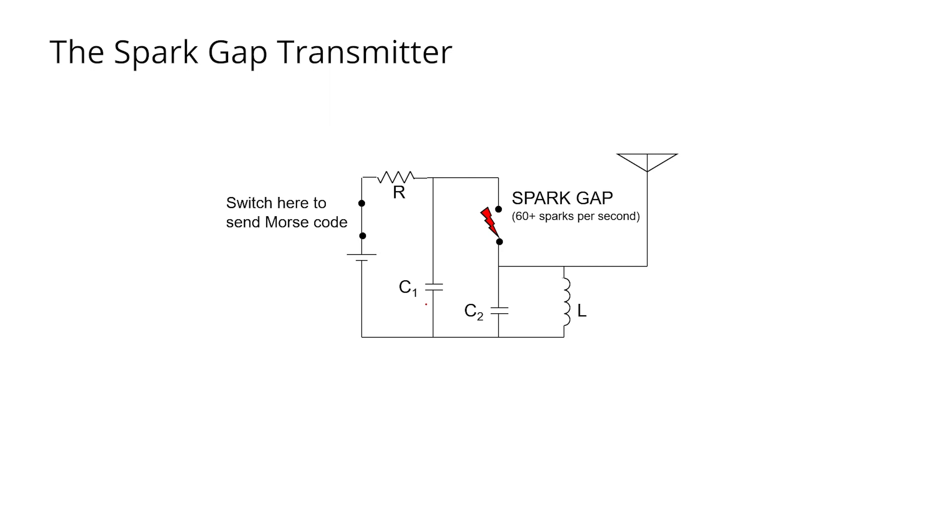So in order to describe how the spark gap transmitter works, let's consider the situation when the Morse switch is closed. As soon as I close the switch and we imagine an initial condition where neither of the two capacitors are charged, then we have zero volts across the capacitors, and current is going to flow out of the battery through resistor R, and C1 will be charged.